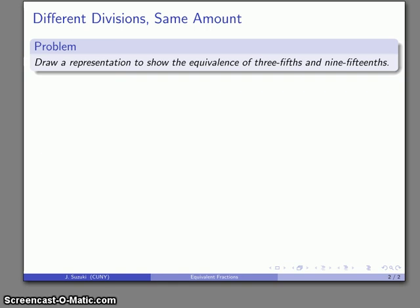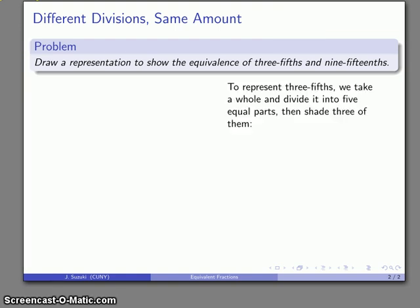And so, for example, I might have the division 3 fifths and I might have the fraction 9 fifteenths. And what I'd like to do is, if possible, to show that these two are equivalent.